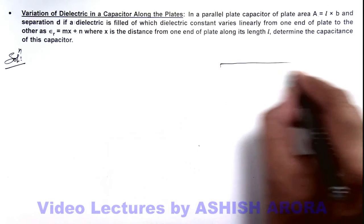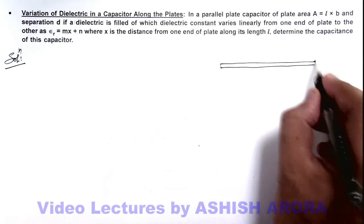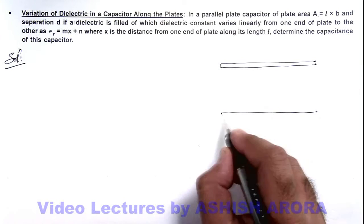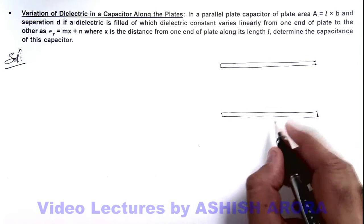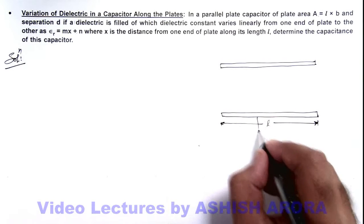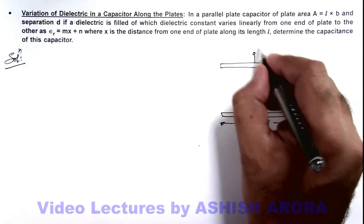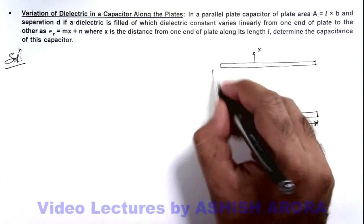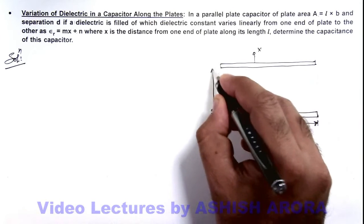Let us draw the capacitor. So if these are the two plates of capacitor which are of length l, and I am assuming their width is b, and say the terminals of the two plates are x and y and the separation between the plates is given as d.